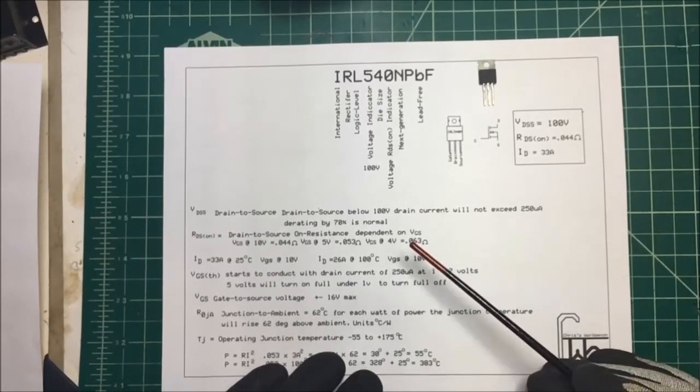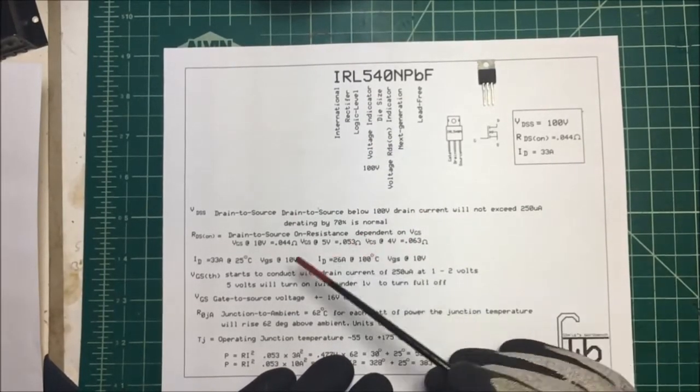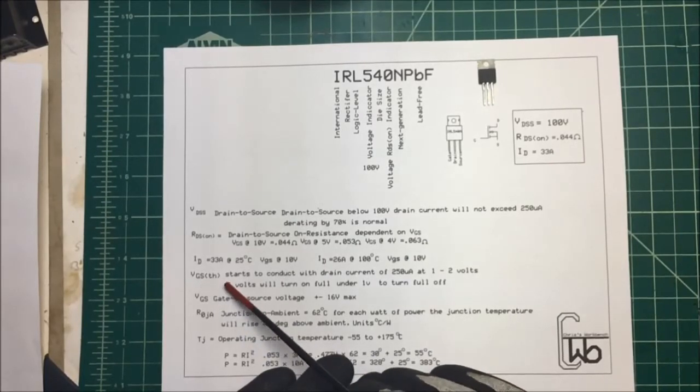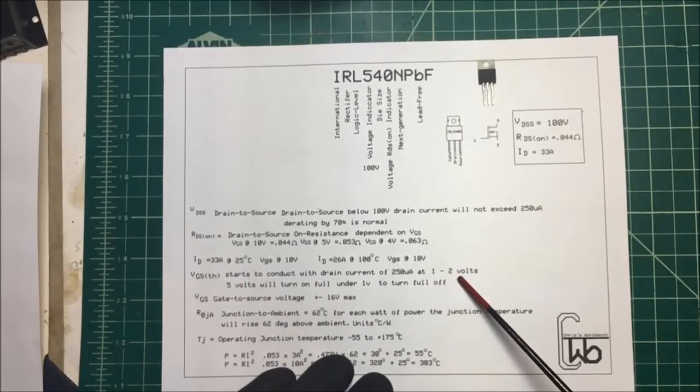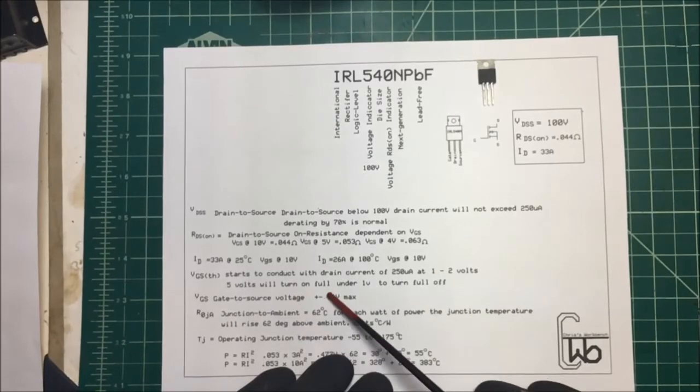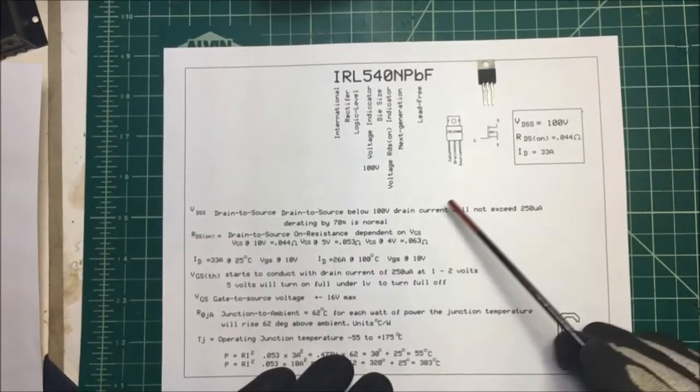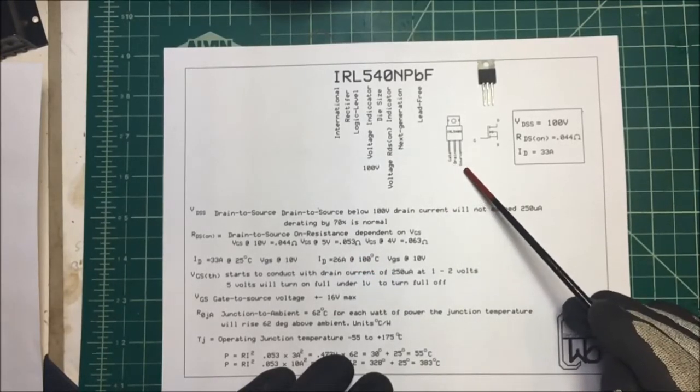Now we want to see if our logic level will actually start it. We take a look at our VGS here, gate to source. That should start to conduct at one to two volts, and five volts is going to turn it on fully, or it's going to turn it on to where the resistance is going to be at 0.053 ohms between the drain and the source.